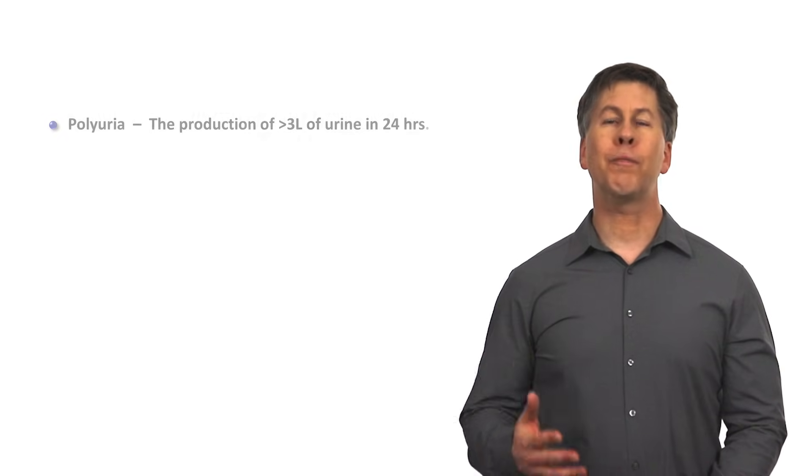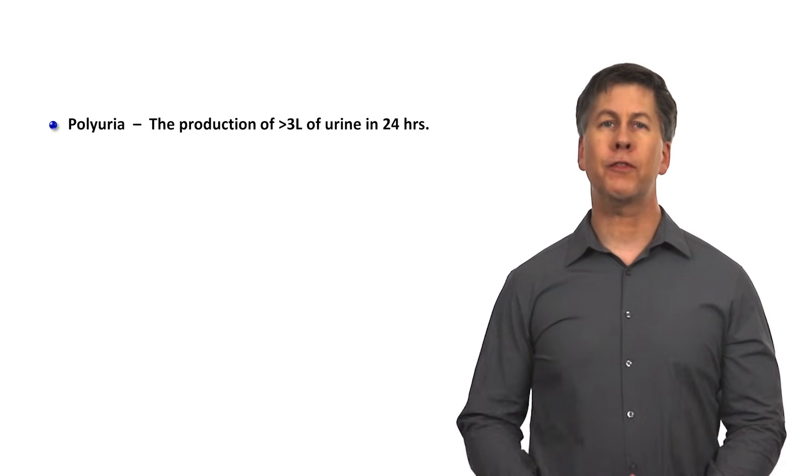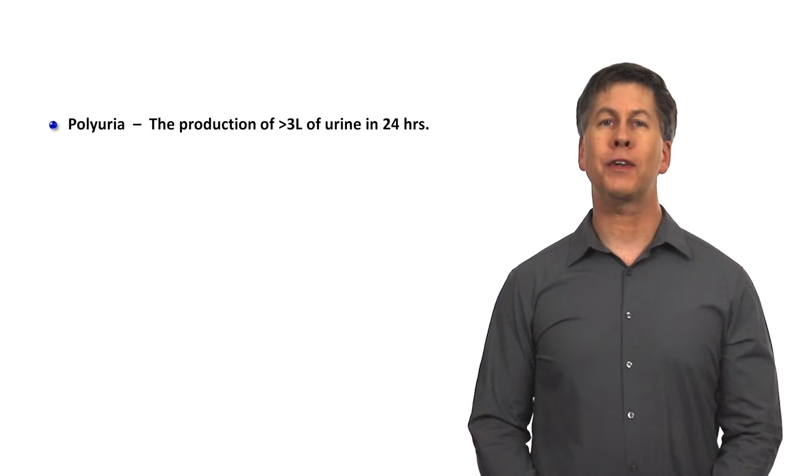First, what is polyuria? It has a simple and objective definition: the production of more than 3 liters of urine within a 24-hour period.